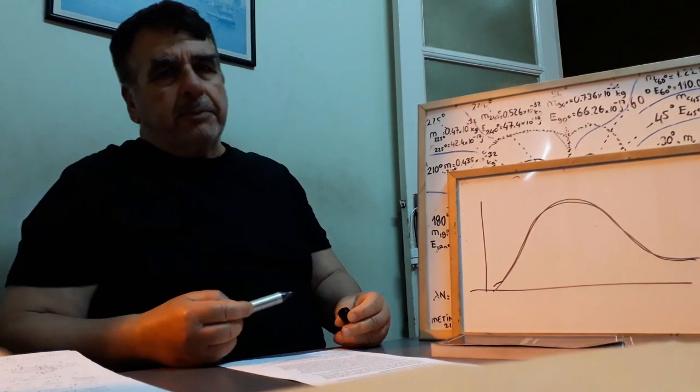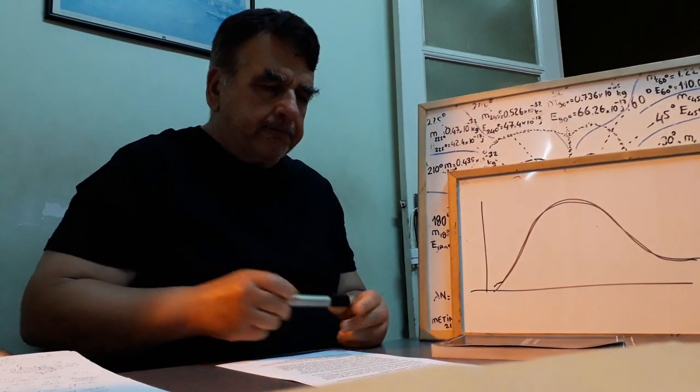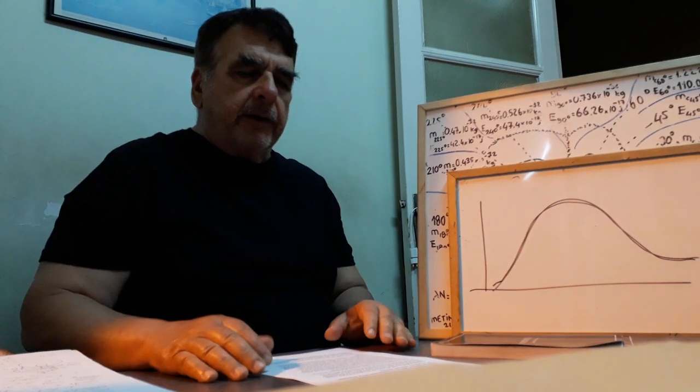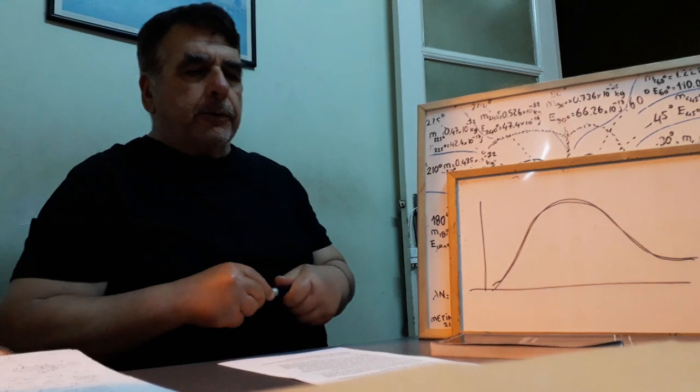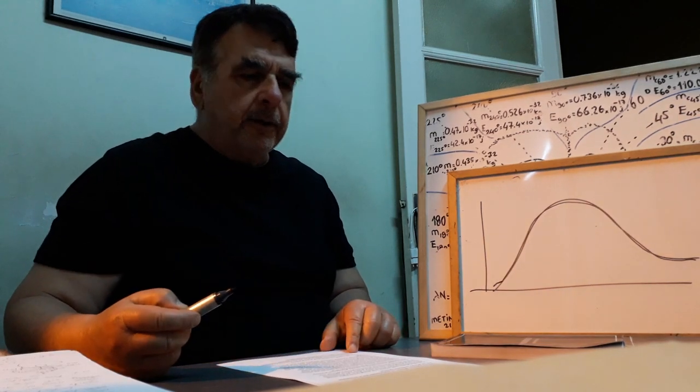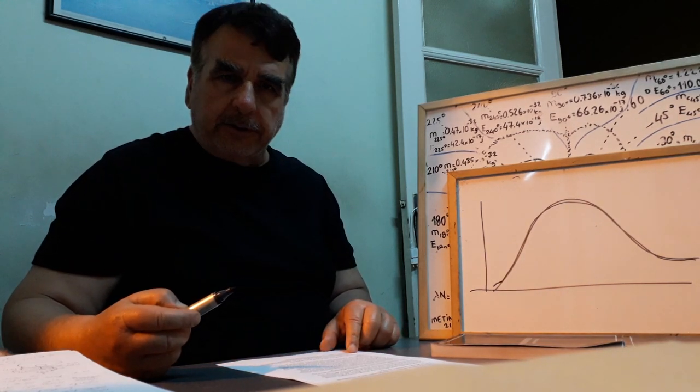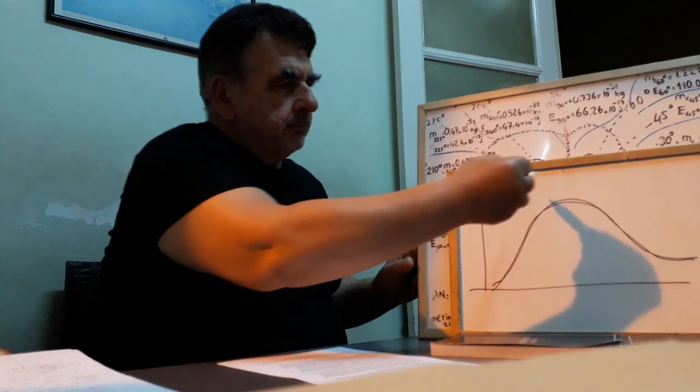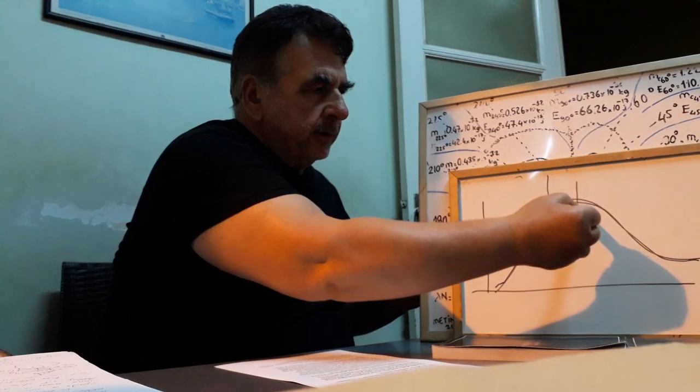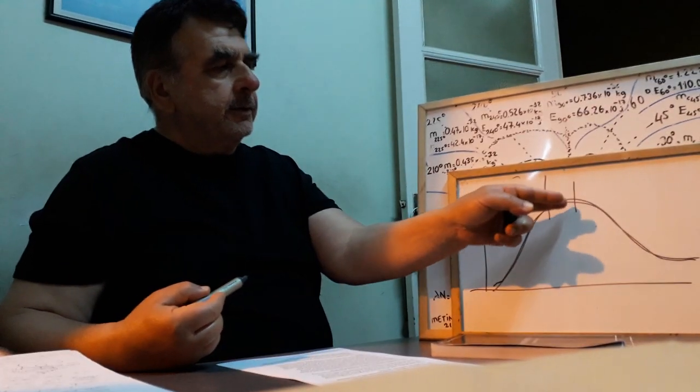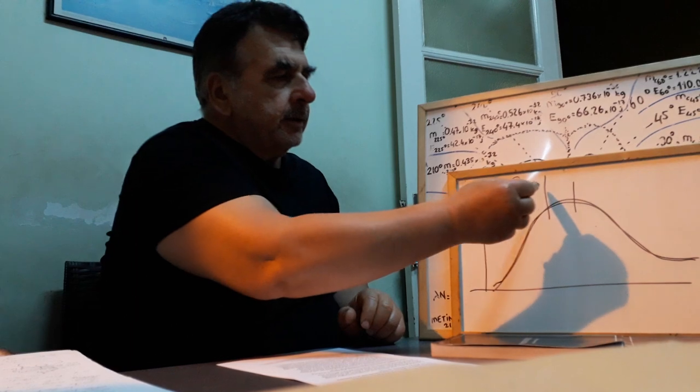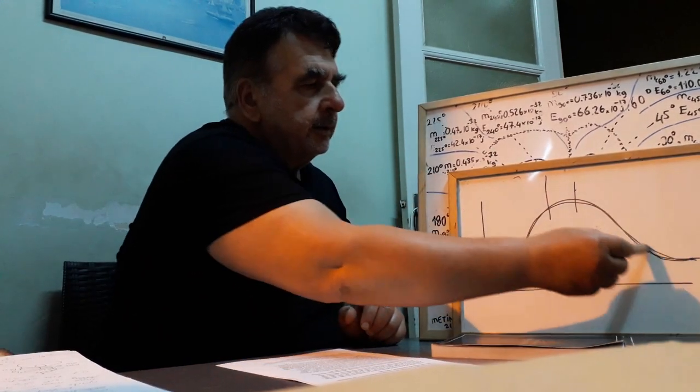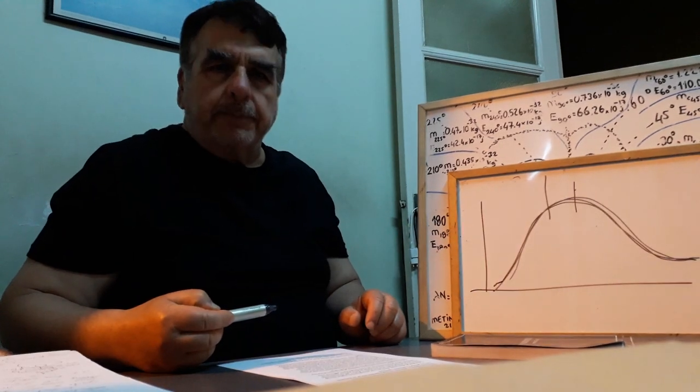You say black body radiation. Whereas, no characteristic line or emission line can generate continuous spectrum. Here, this spike or this spike, for instance, emission lines, they are not continuous spectrum.